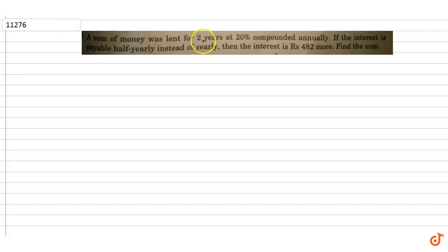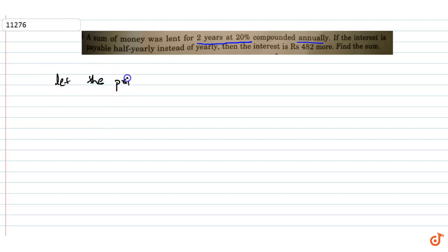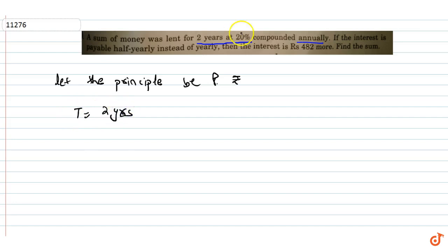What was given in this question? A sum of money was lent for 2 years at 20% compounded annually. Sum of money means a principal amount. Let the principal be P. Time is 2 years. Rate is 20% compounded annually — meaning every year.